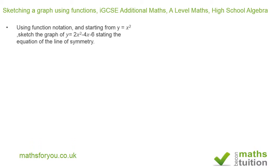Using function notation and starting from y equals x squared, sketch the graph of y equals 2x squared minus 4x minus 6, and state the equation of the line of symmetry.